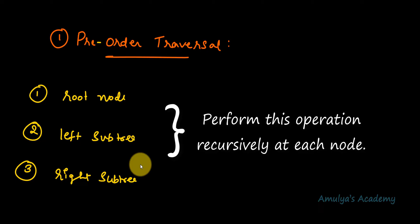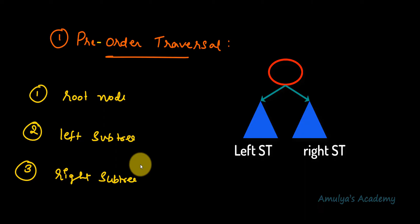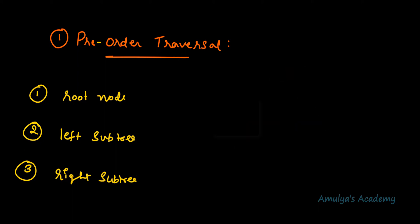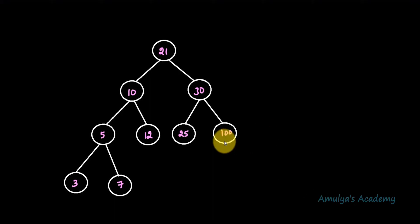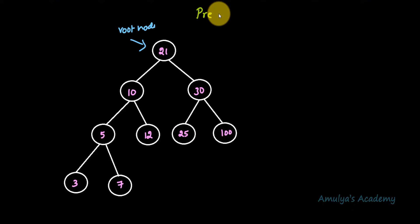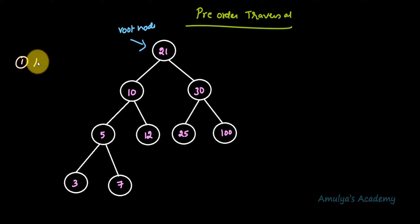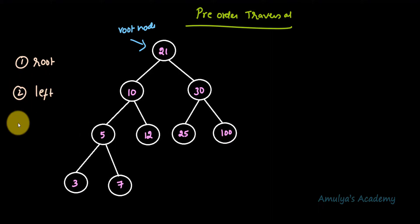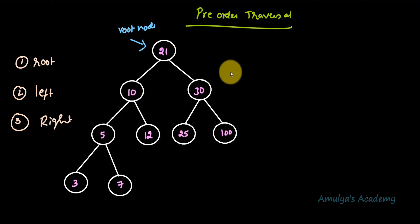When we go to the root node and then visit the left subtree, within that left subtree you also follow the same three steps: visit its root node, then its left subtree, then its right subtree. You need to perform this operation recursively. So let's visit a tree using this pre-order traversal.